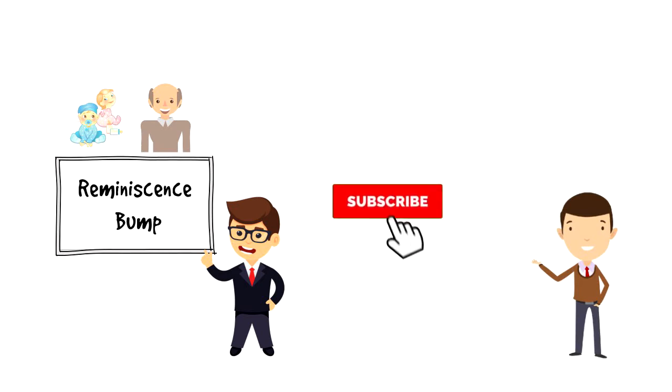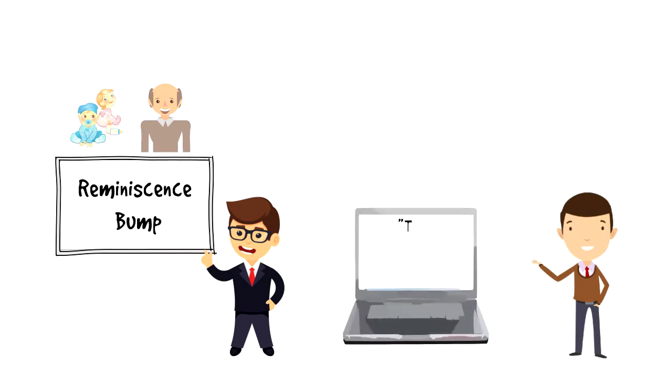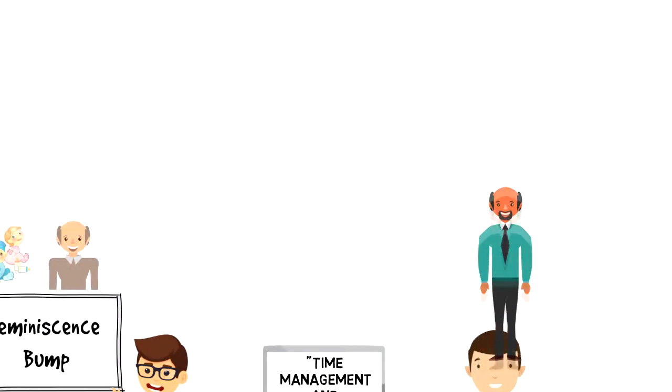If this is your first time on this channel, make sure you subscribe and hit the bell icon to get updates on my latest videos about time management and productivity. The reminiscence bump is the tendency for older adults over 40 to have increased or enhanced recollection of events that occurred during their late teens and in their 20s.